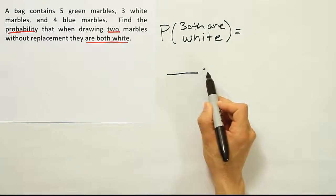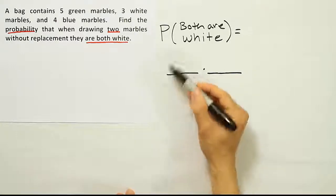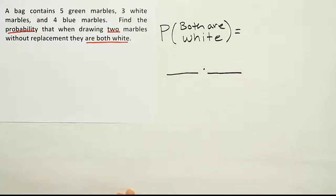I'm going to draw two spaces then to represent the two selections, the two selections of marbles. Now, what should this first fraction represent? That's what we have to figure out. What's this probability supposed to be?